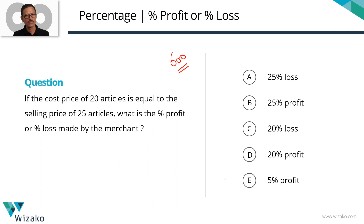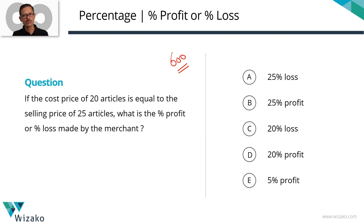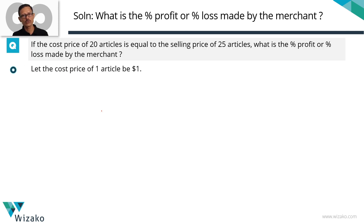We don't have the cost price, we don't have a selling price, but we have a relationship between the cost price of 20 articles and the selling price of 25 articles. There are multiple ways of solving this question. I'm going to pick an easy, intuitive method and get the answer in about two to three steps — by assigning a value for the cost price of one article.